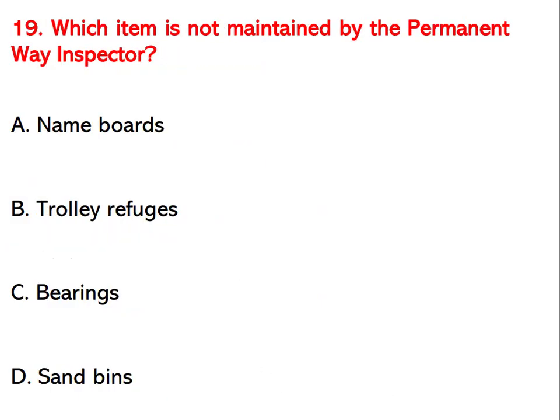Which item is NOT maintained by the permanent way inspector? Options are name boards, trolley refuges, bearing, or sand bins. Bearing is not maintained by the permanent way inspector.